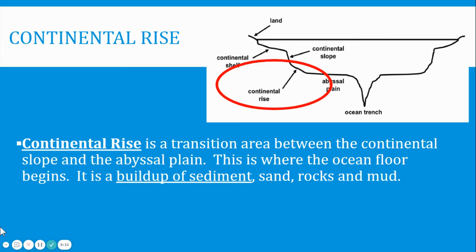The next part is called the continental rise. The continental rise is a transition area between the continental slope and the abyssal plain. This is where the ocean floor begins. It is a buildup of sediment, sand, rocks, and mud.